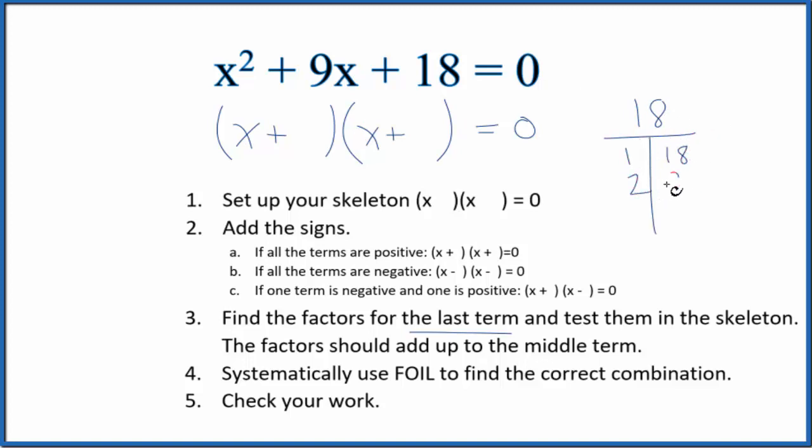2 times 9, or 3 times 6. So we look at these factors - the one that adds up to 9 is 3 and 6. So we can put that in here: 3 and 6. So we've factored this equation.